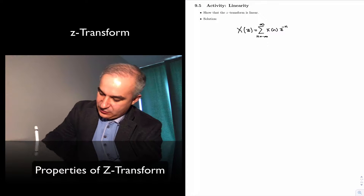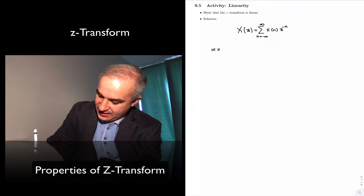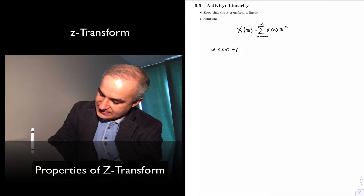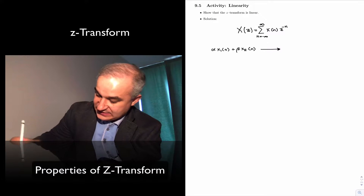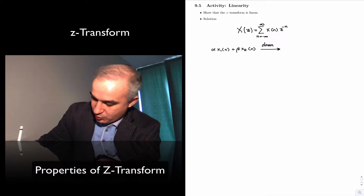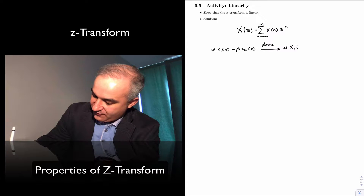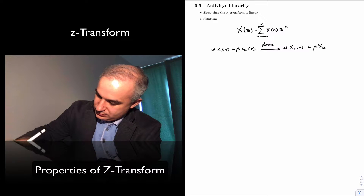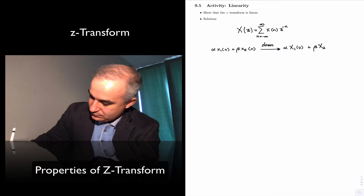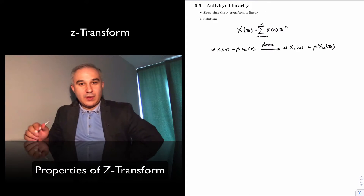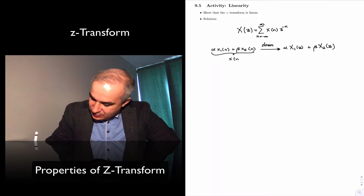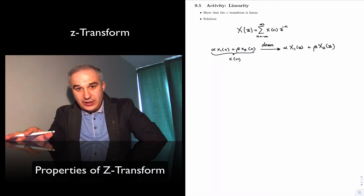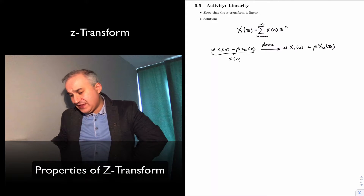We can say that if we apply an input alpha x1 of n plus beta x2 of n, we expect the transform to give alpha times the C-transform of x1 plus beta times the C-transform of x2. Let's apply this input and see if we get that output, showing that it obeys the principle of superposition and that the transform is linear.